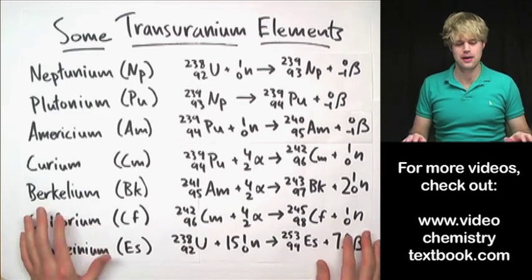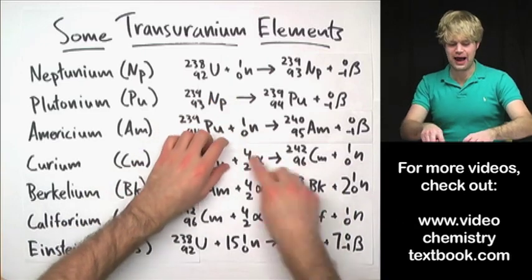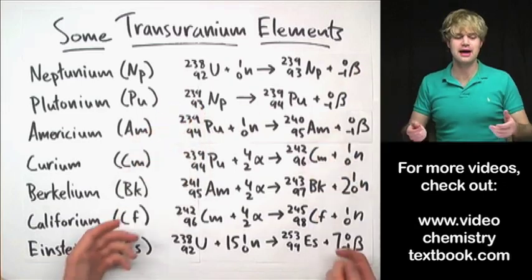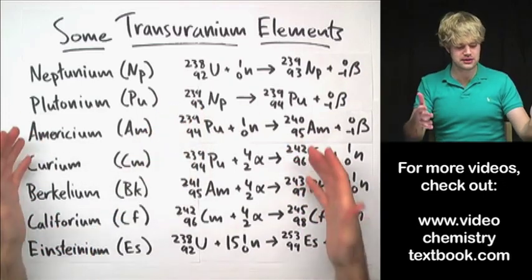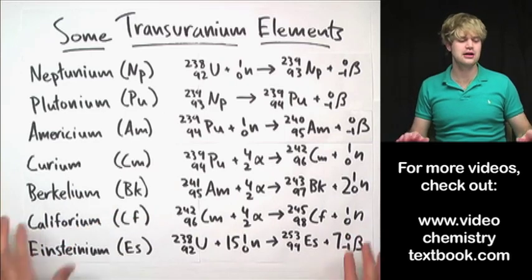We don't find them in nature. But by adding neutrons, by adding alpha particles, and by letting new things we've created undergo beta decay, we're able to make these elements in the lab that you can't normally find in nature.